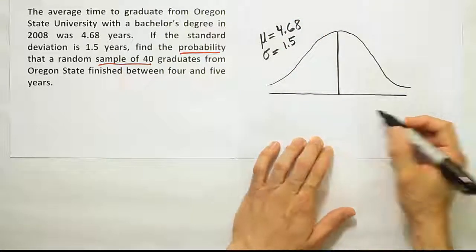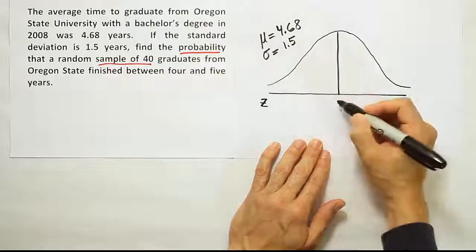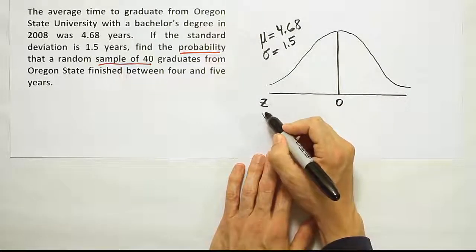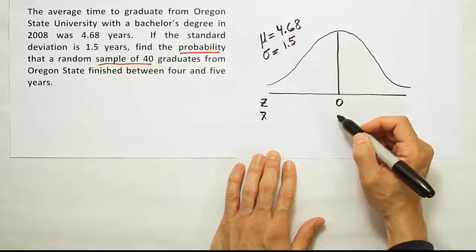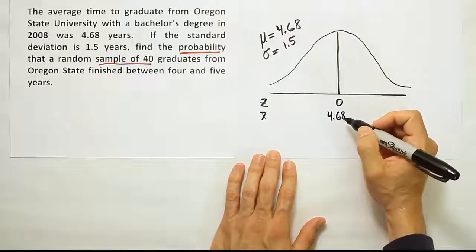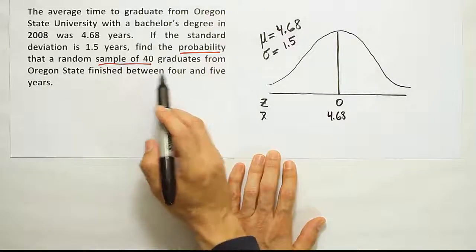Now the next step in the process is going to be to label the axes down here. The z axis is centered at 0. We're going to have an x bar axis. That x bar axis will be centered at the 4.68. I'm looking for the probability somebody finished between 4 and 5 years.